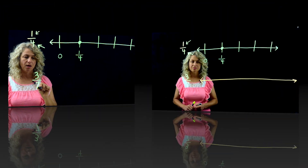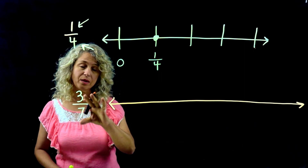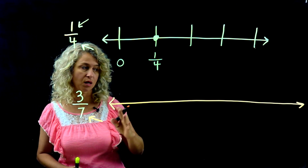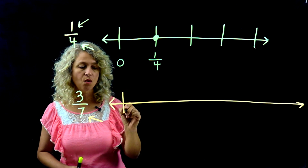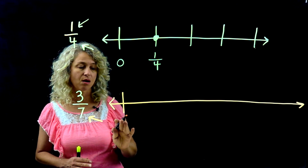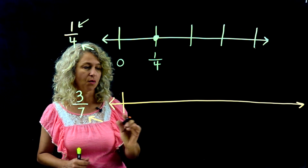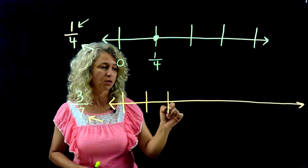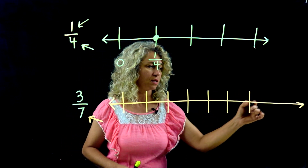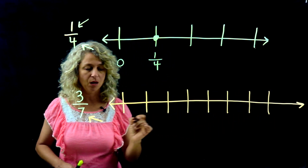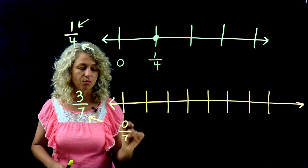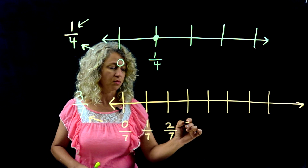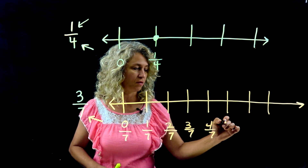What if you wanted to place three sevenths on the number line? The denominator determines how many equal spaces, so draw one tick mark — it doesn't count as one of the seven, this is always zero. Then draw your seven spaces: one, two, three, four, five, six, seven. Label them: zero sevenths, one seventh, two sevenths, three sevenths, four sevenths, five sevenths.